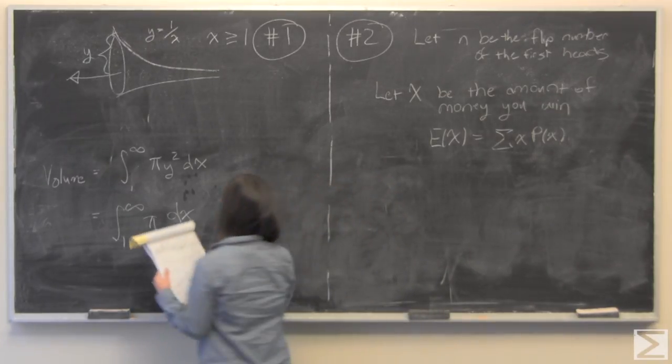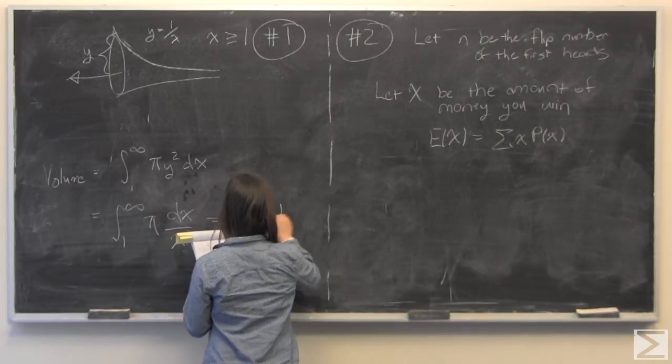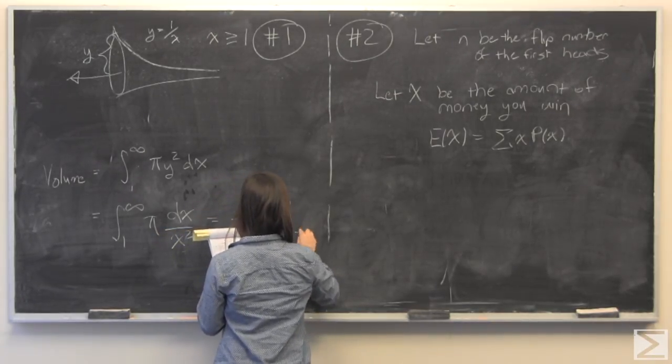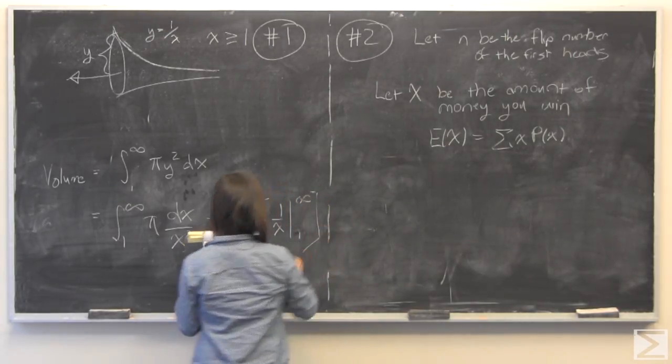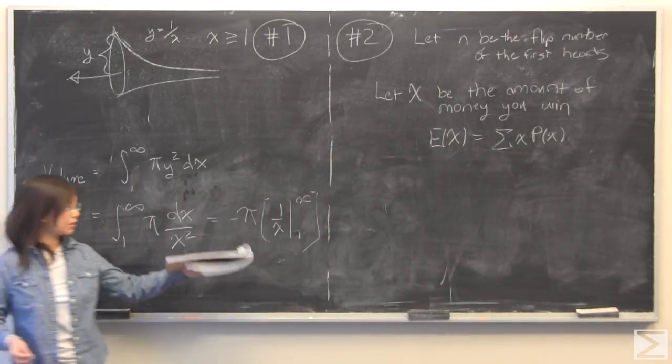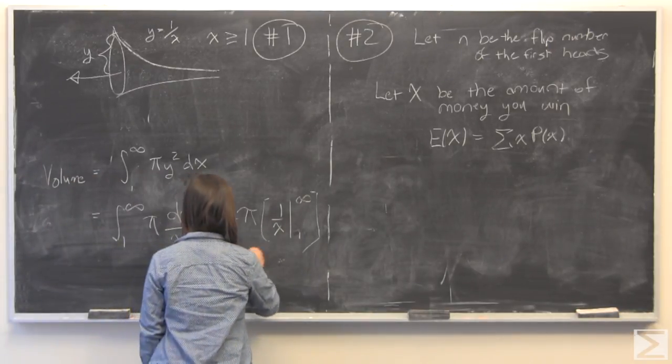Okay so this evaluates pretty easily. We get negative pi times 1 over x evaluated 1 to infinity and what that gives you is pi, positive pi.